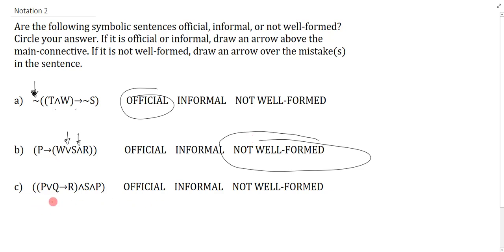Finally, we have question C. It's not in official. I can just sort of see I don't have enough brackets, so it's either informal or not well-formed. All the letters check out again. So is it reasonable? Well, the only issue is this double conjunction here. Over here, this is all good.